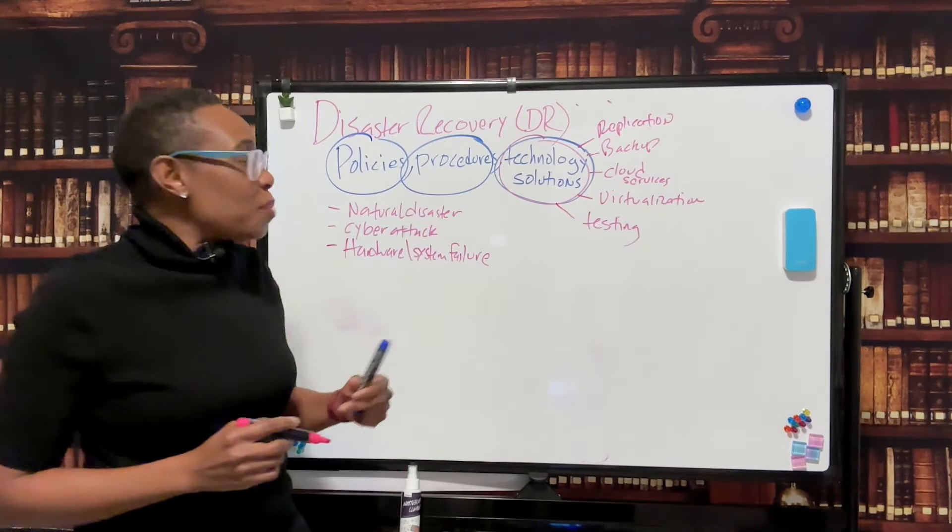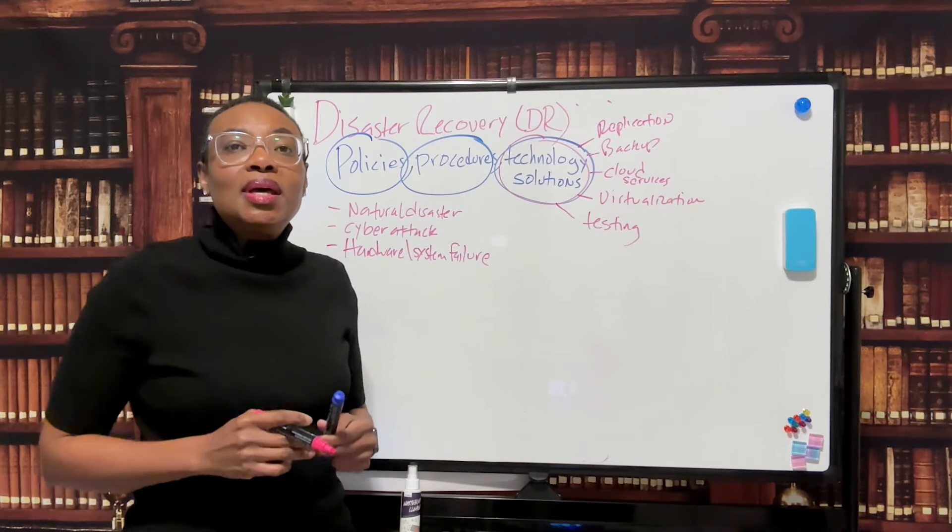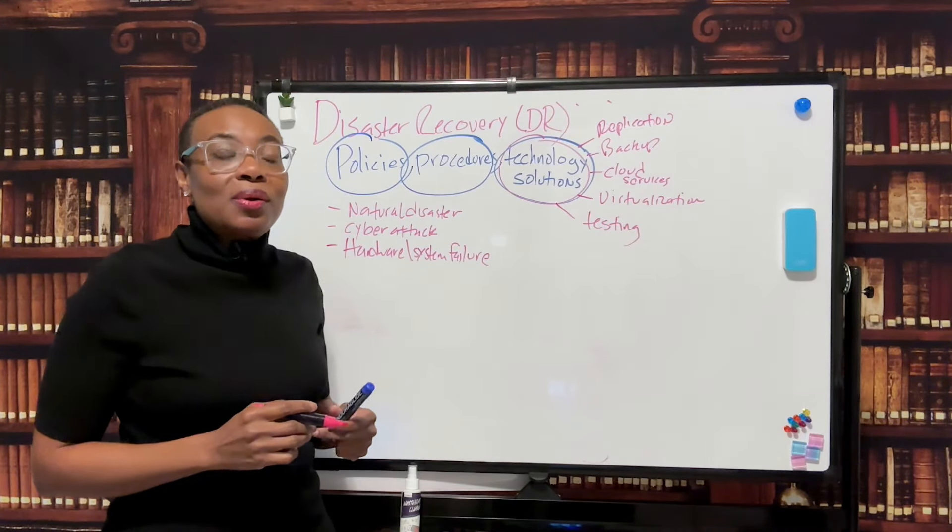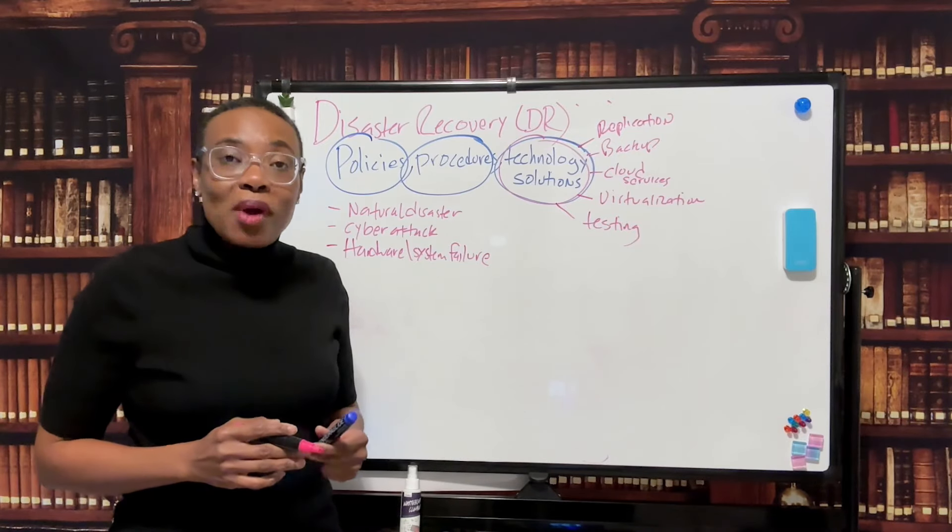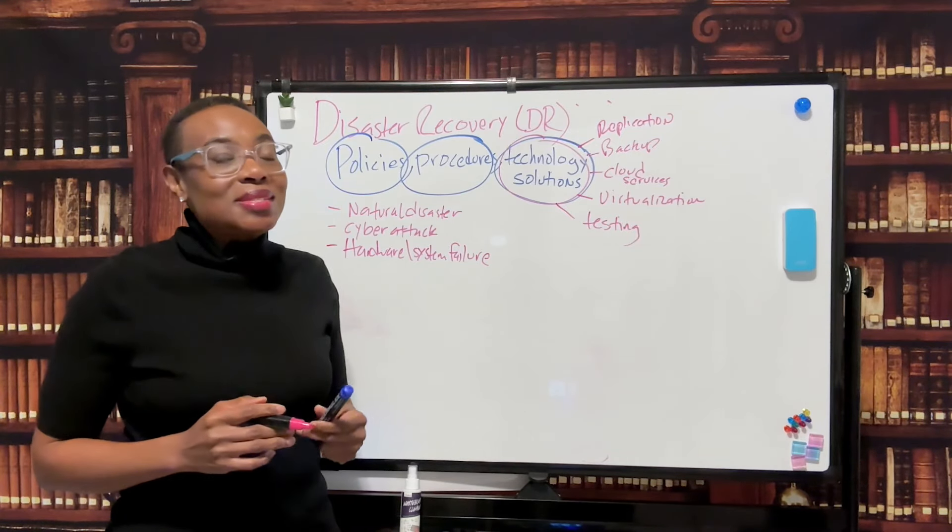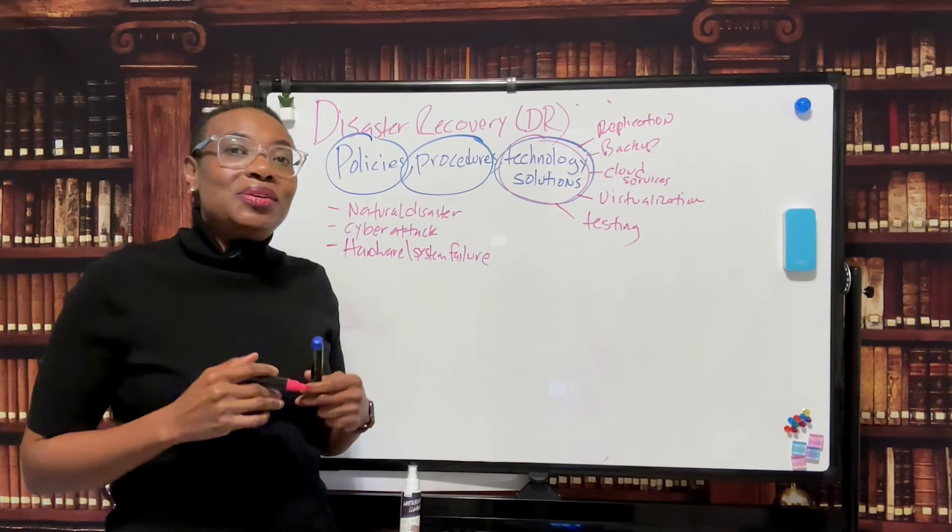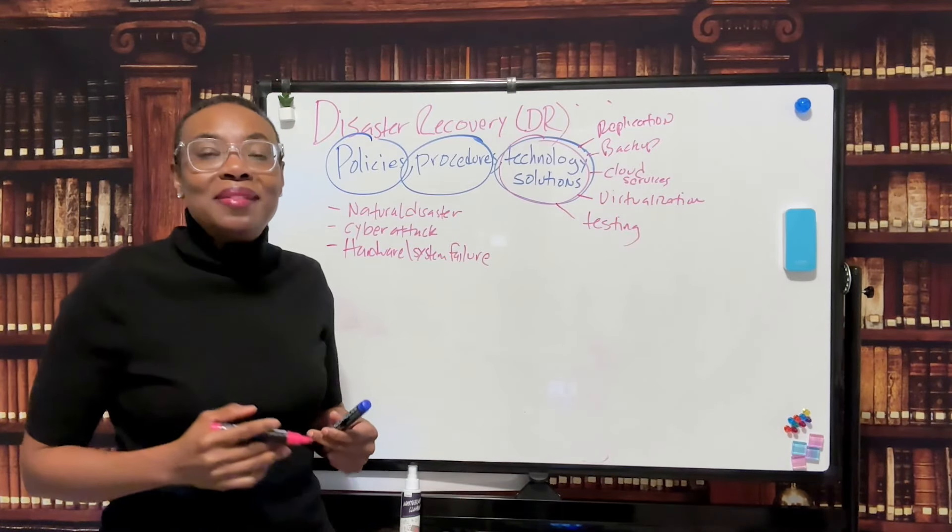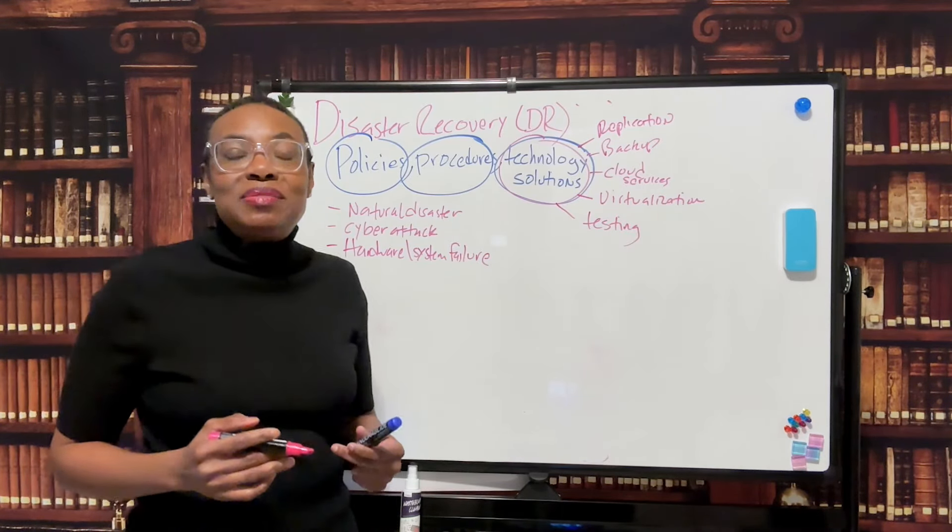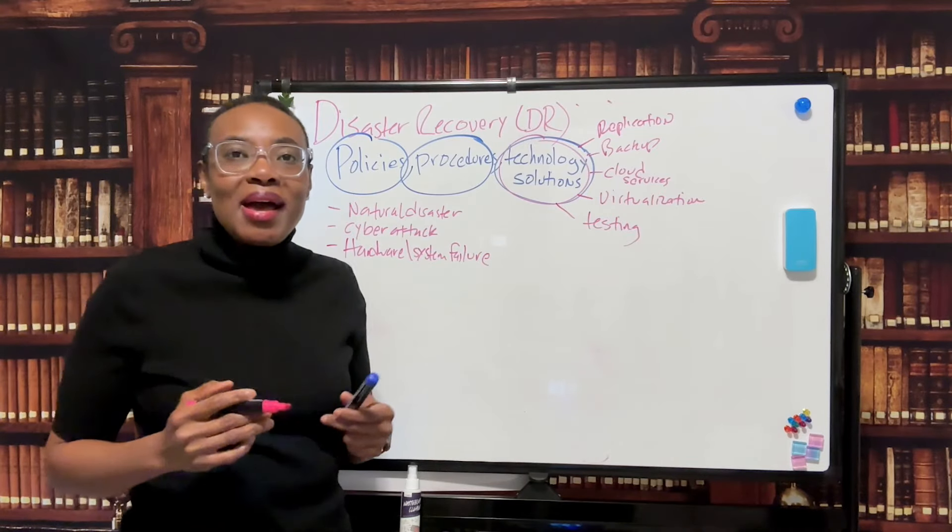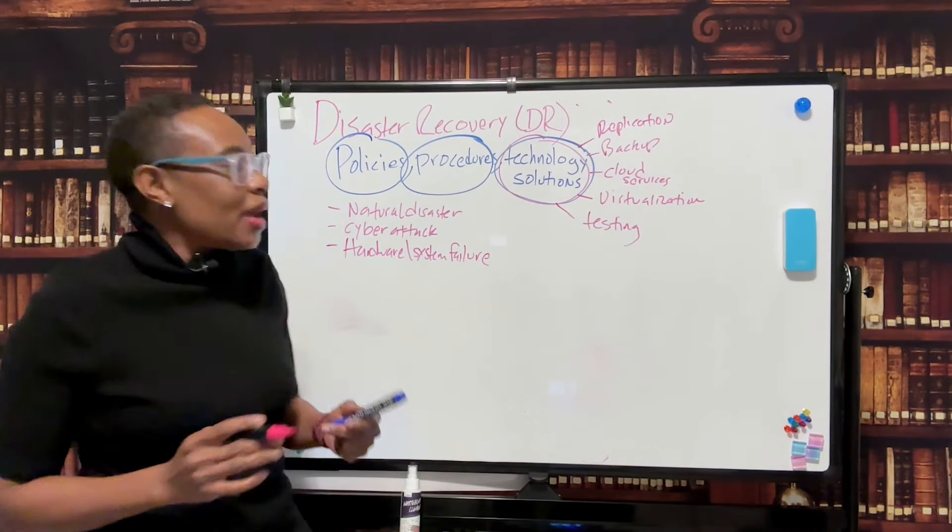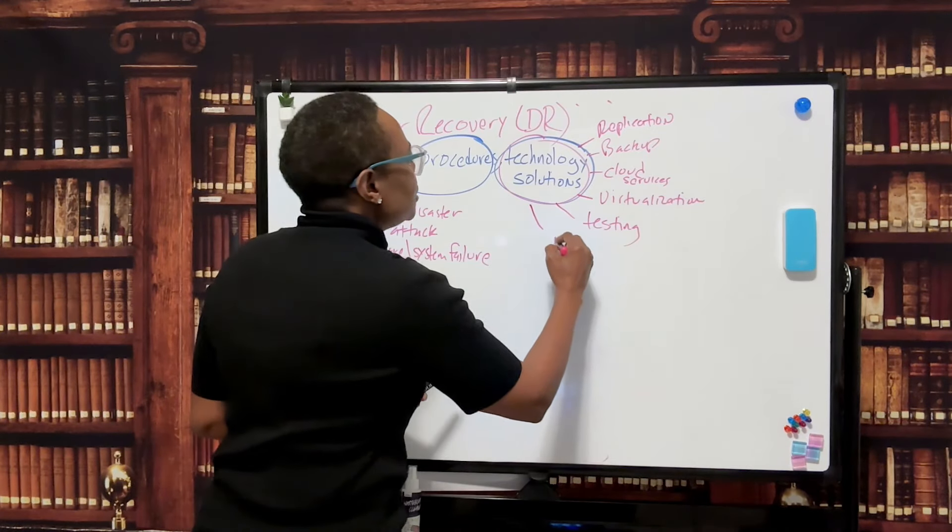And then we have testing. Testing needs to happen. DR testing should happen a few times a year to make sure your plan works properly. Because you don't want something to happen and then you go through your DR plan and realize it is greatly flawed. And then you're in a reactive state versus proactive, and you guys know that I love being proactive when it comes to IT.